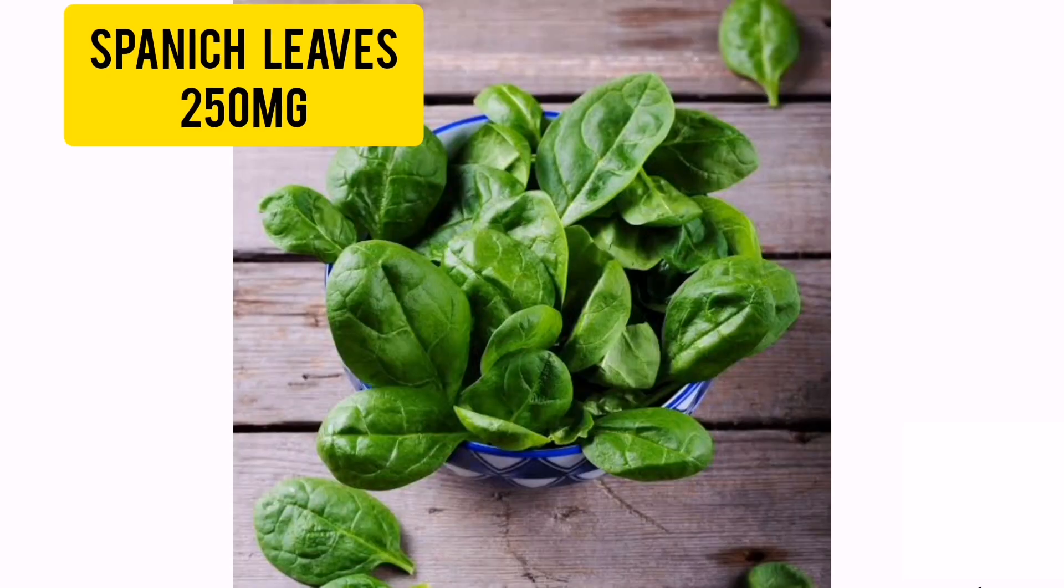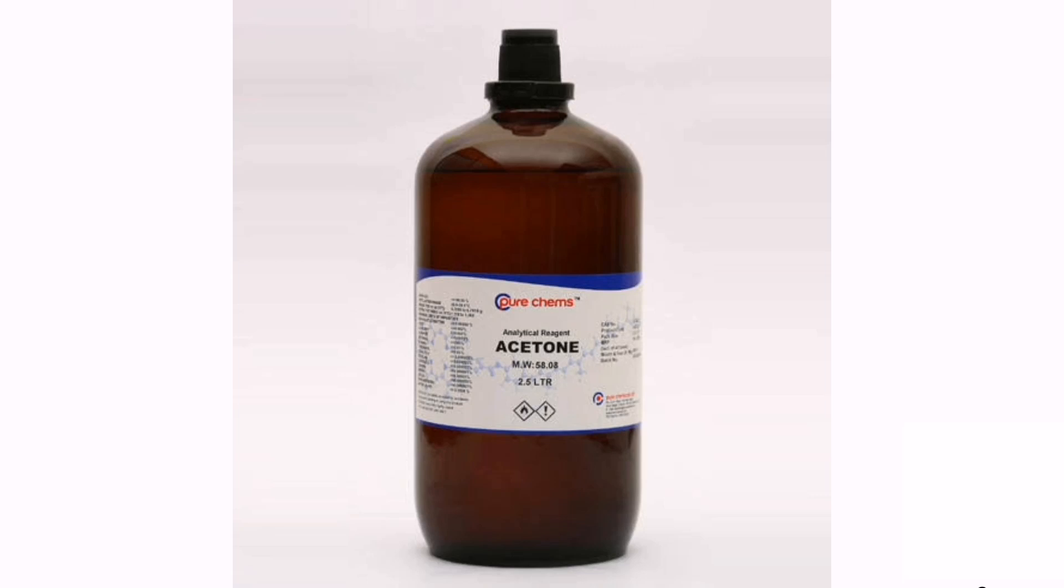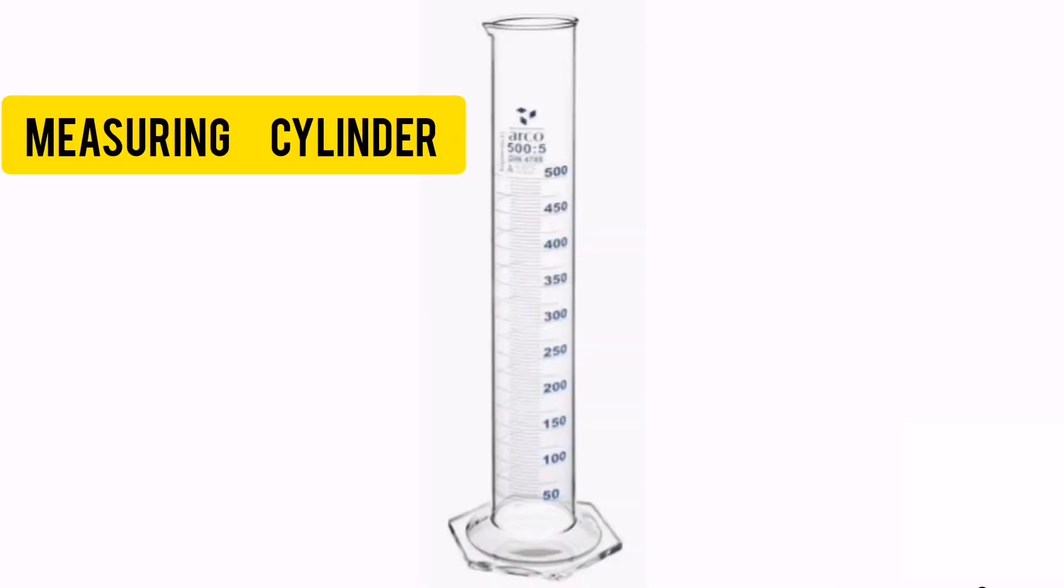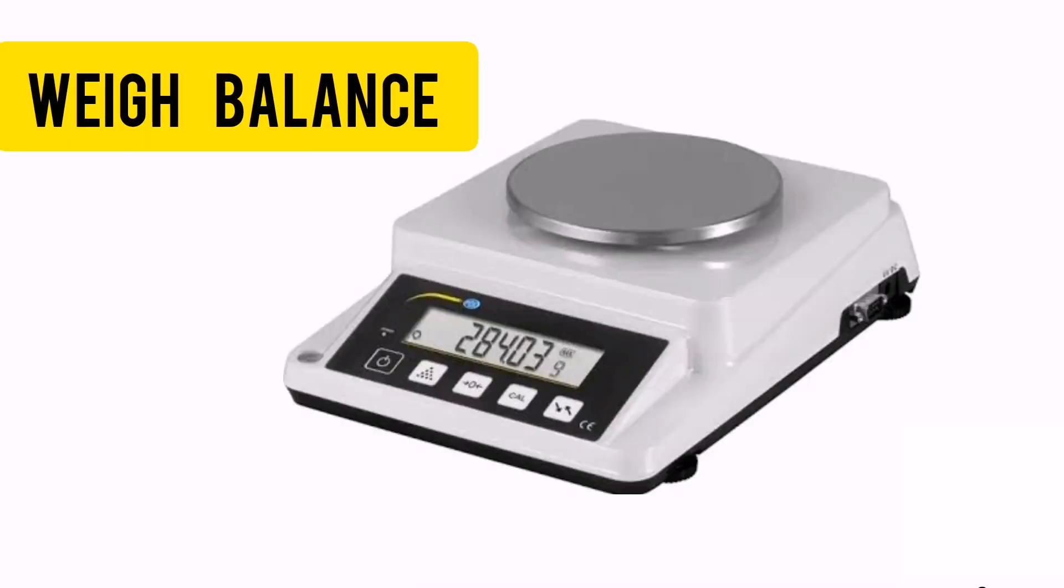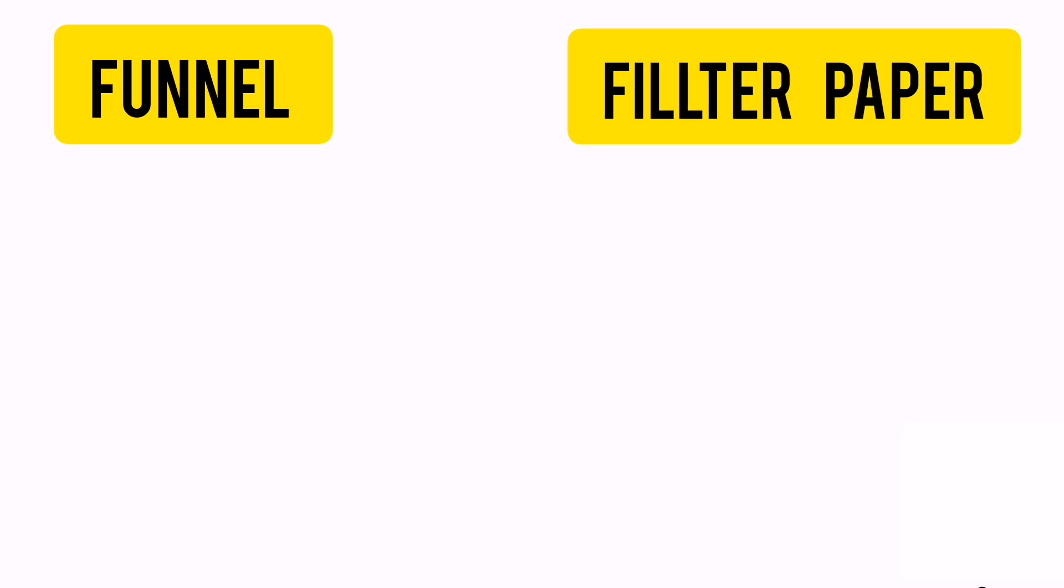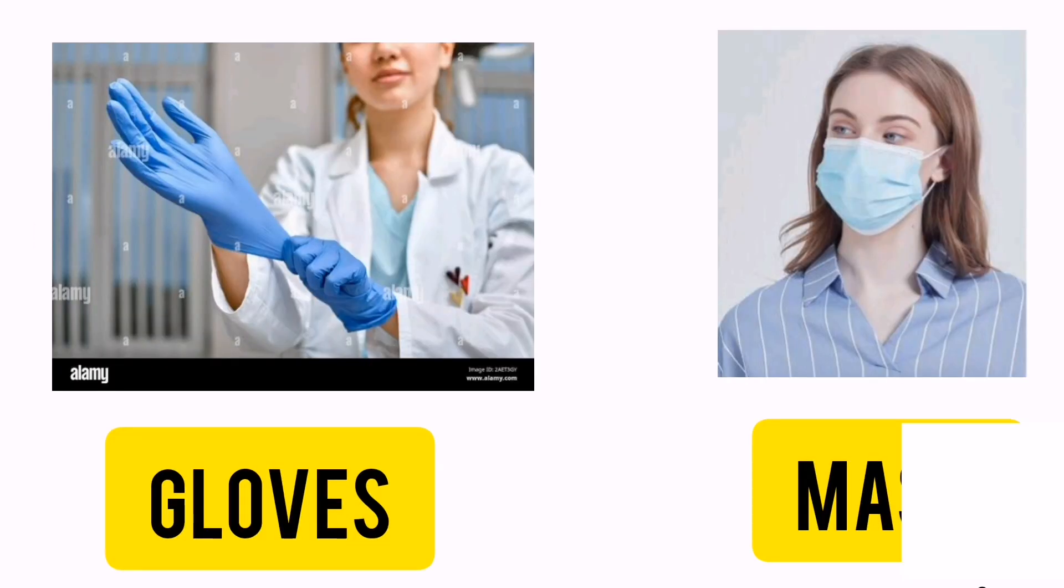Materials required: Spinach geranium leaf sample, 250 mg. Acetone, 80%. Measuring cylinder, weigh balance, funnel, filter paper, pestle and mortar, gloves, mask.